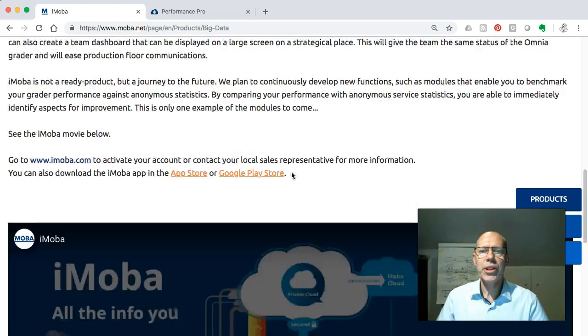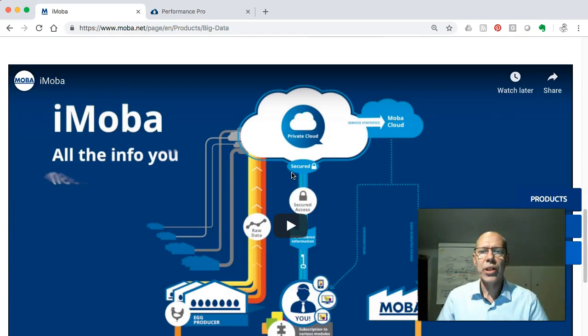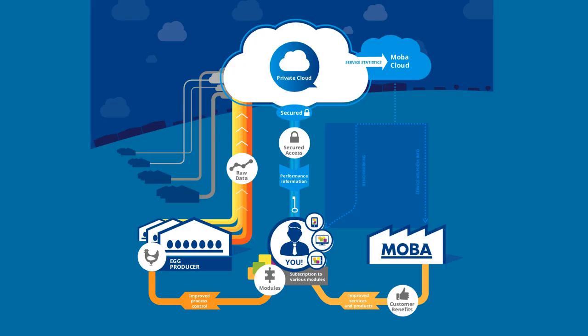If you go down a little bit you will encounter a graphic. This graphic, which is also a link to a video that is pretty much self-explaining, is for me also a great tool to inform you about the structure of iMoba. It all starts in the packing station. Here there is MOBA equipment and that is generating an awful lot of data.